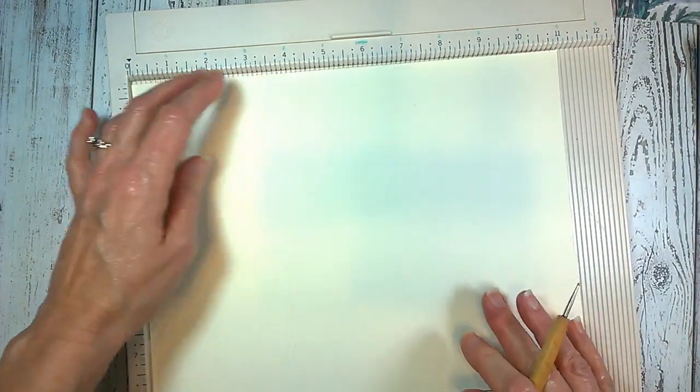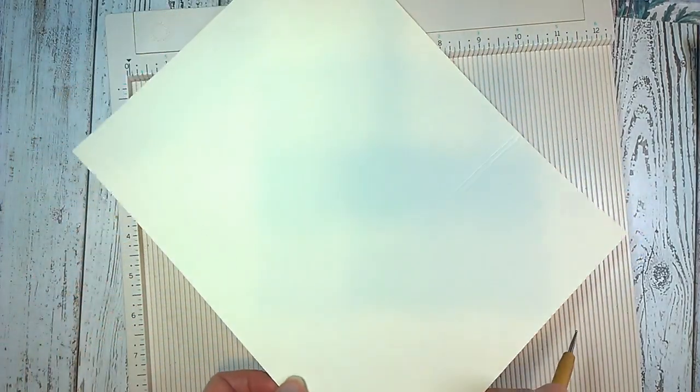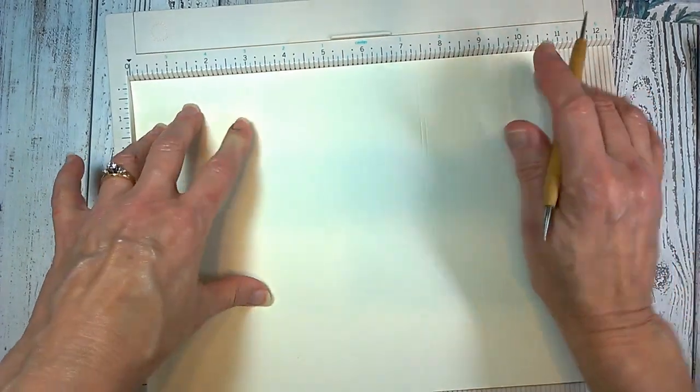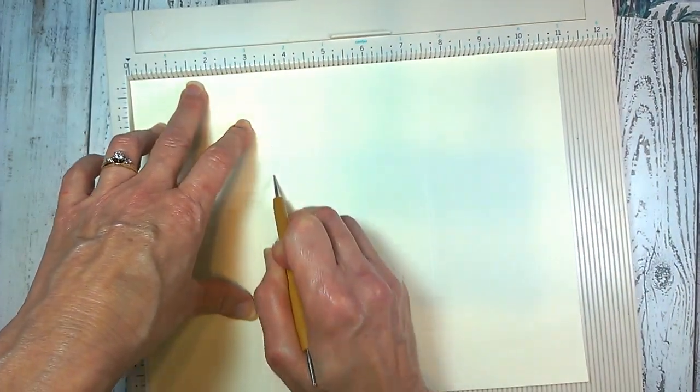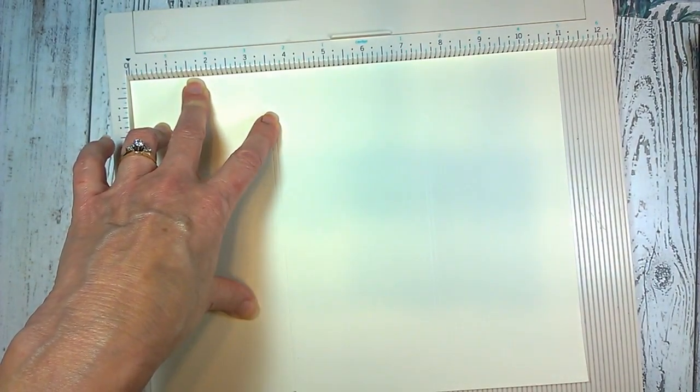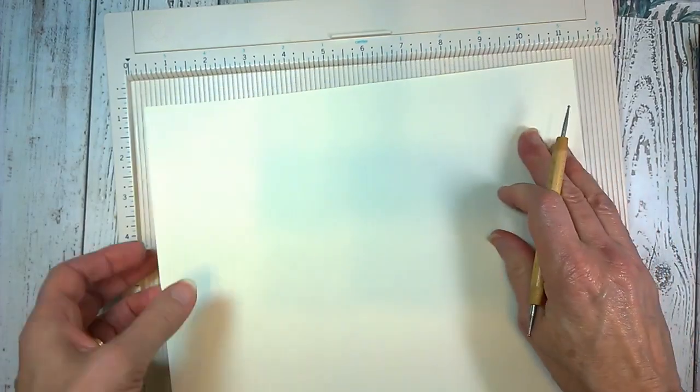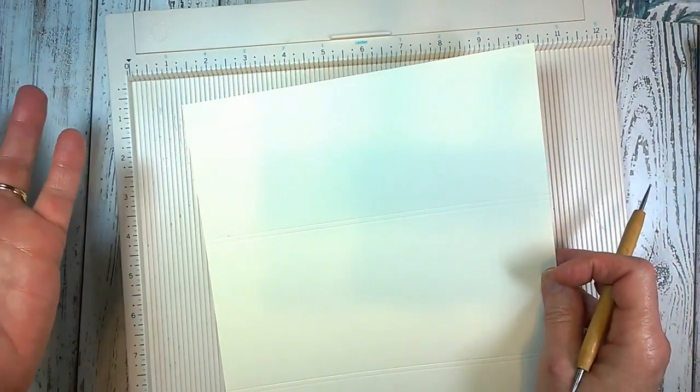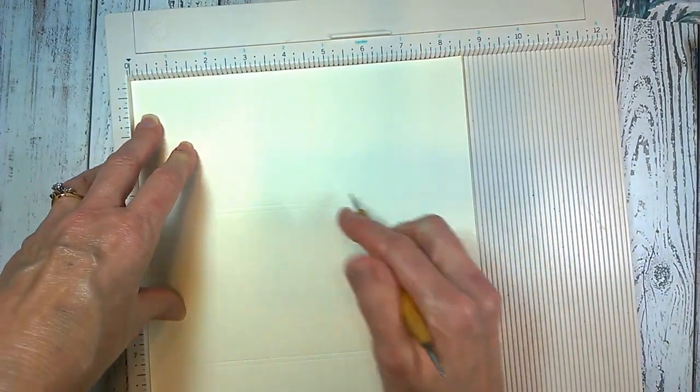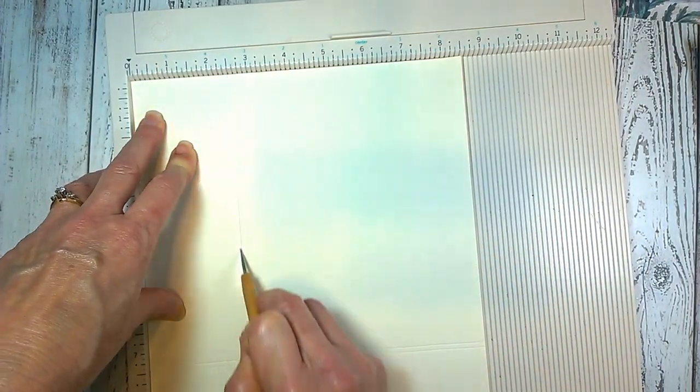You're going to rotate your paper around, again with the 11-inch side above. Come down 3.5 inches and again 3 and 5/8 inches, just an eighth of an inch over from that place. Now take the short end, the 8.5-inch side, and put it up against your board. You're going to score it 2.5 inches all the way down.